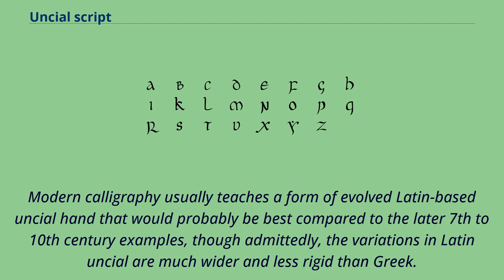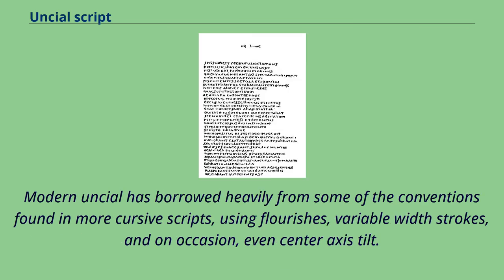Modern calligraphy usually teaches a form of evolved Latin-based Uncial hand that would probably be best compared to the later 7th to 10th century examples, though admittedly the variations in Latin Uncial are much wider and less rigid than Greek. Modern Uncial has borrowed heavily from some of the conventions found in more cursive scripts, using flourishes, variable-width strokes, and on occasion even center-axis tilt.